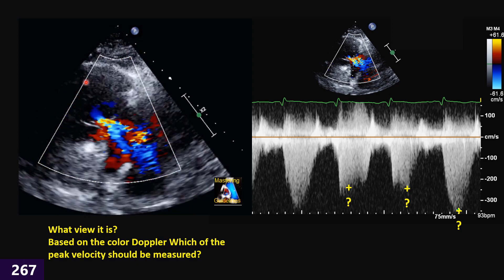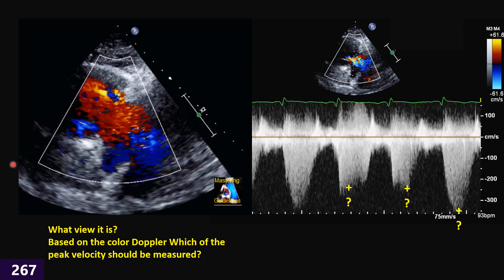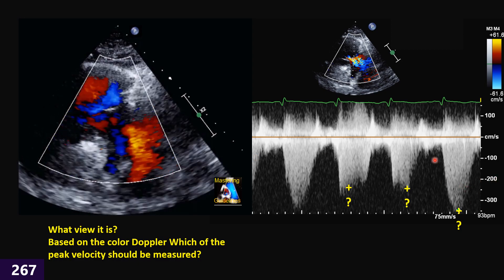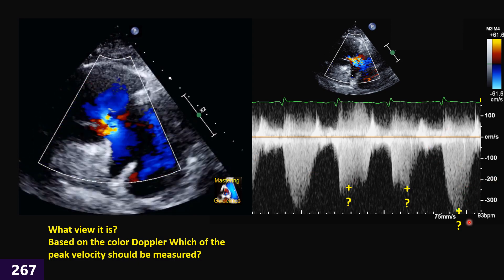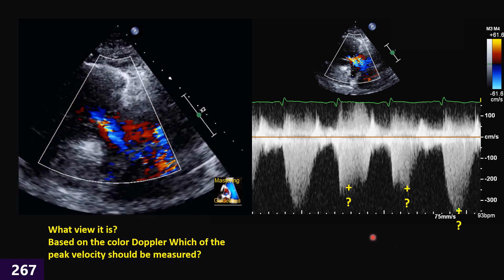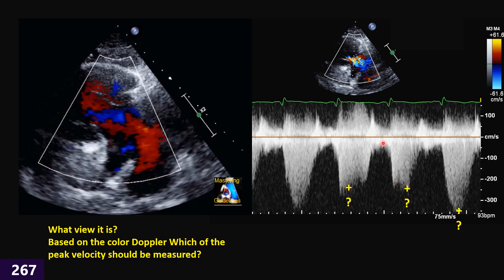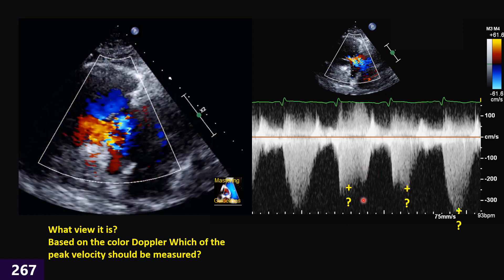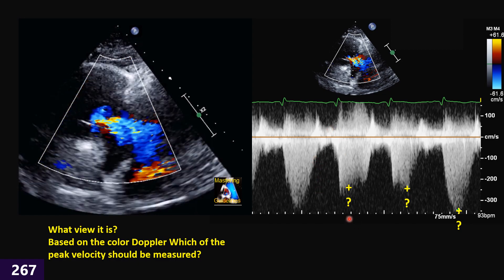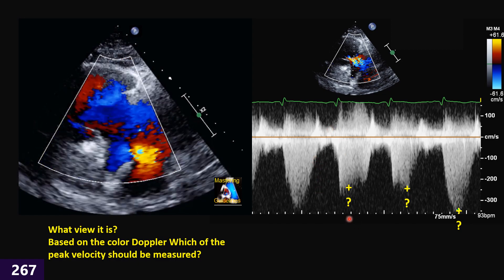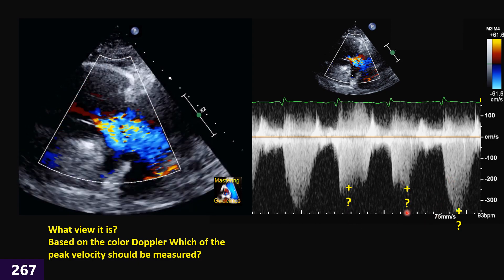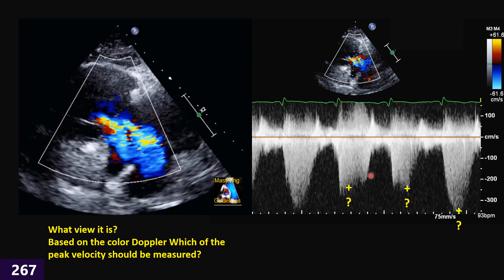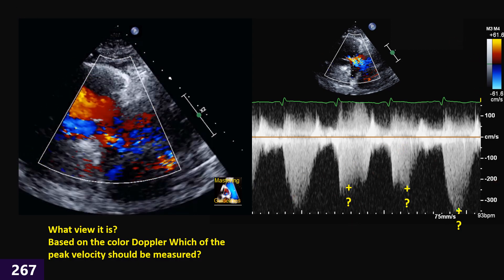Here we have a case. First, which view is this? Second, we do Doppler on that view — you have to identify it — and we get this Doppler. For measuring the peak pressure gradient, which one do we use: this one, this one, this one, or all of them and we calculate the average? For any option you choose, you have to explain why — why you chose each of them or all of them, and which is the better and correct way based on this color Doppler, ECHO, and all findings we have here.